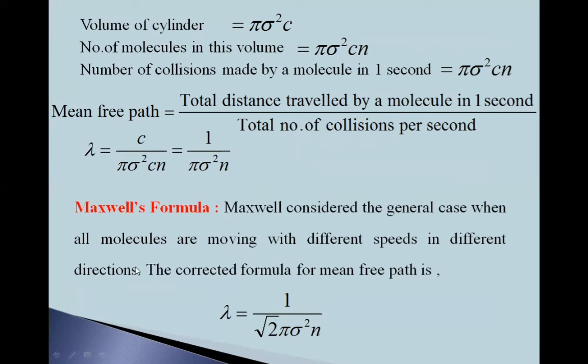Now Maxwell's formula. This formula is derived keeping in mind a molecule is in motion and other molecules are stationary. But Maxwell considered the general case when all molecules are moving with different speeds in different directions. And he corrected this formula of mean free path as lambda equals 1 upon root 2 π sigma squared n.